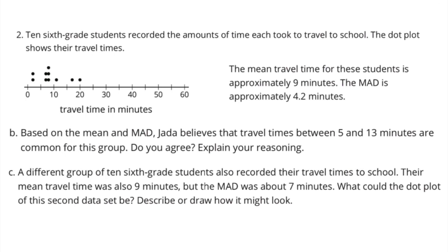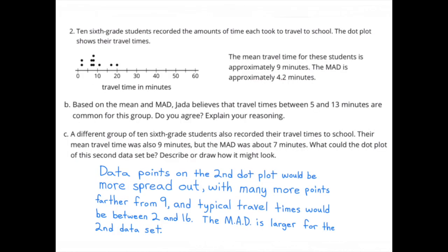Part c: A different group of ten sixth-graders also recorded their travel times. Their mean travel time was also nine minutes, but the MAD was about seven minutes. What could the dot plot of this second data set look like? Data points on the second dot plot would be more spread out, with many more points farther from nine. Typical travel times would be between two and sixteen minutes. The MAD is larger for this second data set.